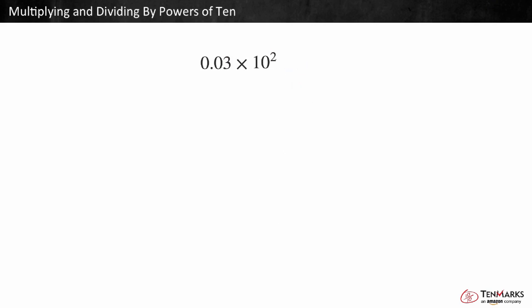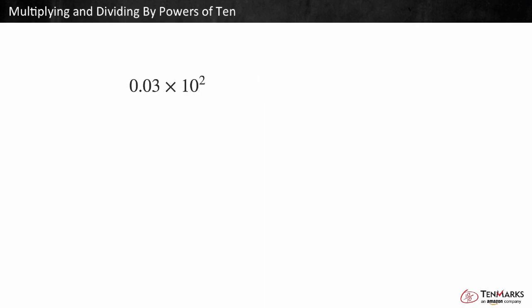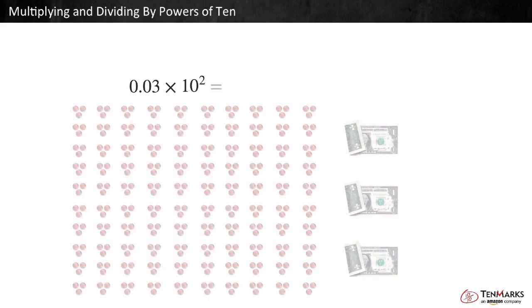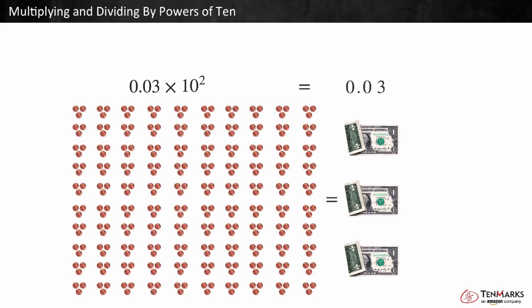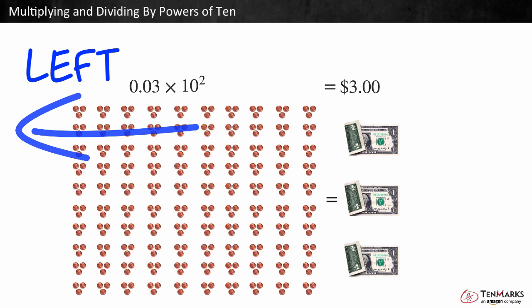Let's look at 3 hundredths times 10 to the second power. 10 to the second power is the same as 10 times 10, which equals 100. 3 hundredths is the same as 3 pennies. If we have a hundred groups of 3 pennies, we would have $3. Notice that the digits shifted to the left two times.